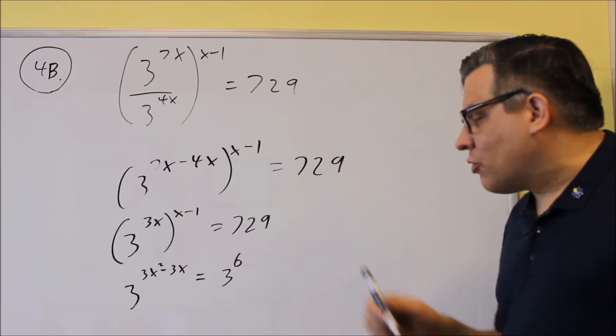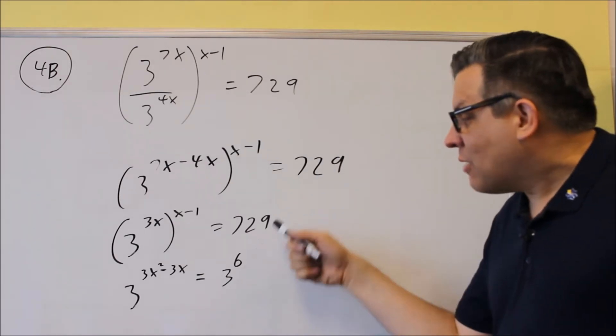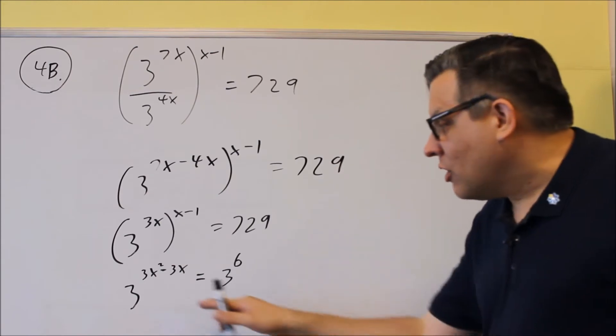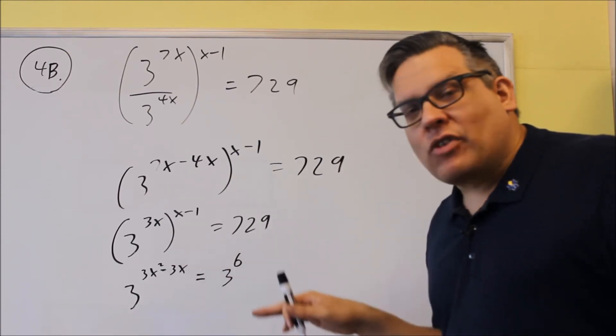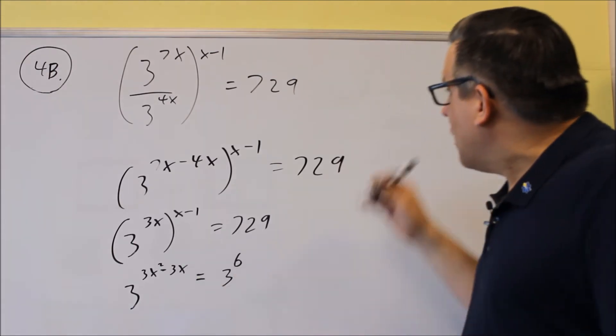And then you'll get 3 times 3 times 3 and so forth 6 times, and you'll get 729. So that's how you can do that. As before, we said that if you have equal basis property, you can now set the exponents equal.